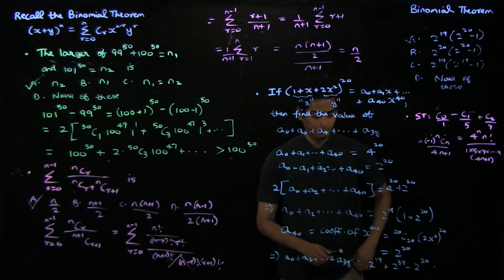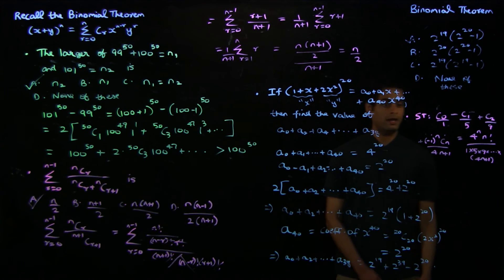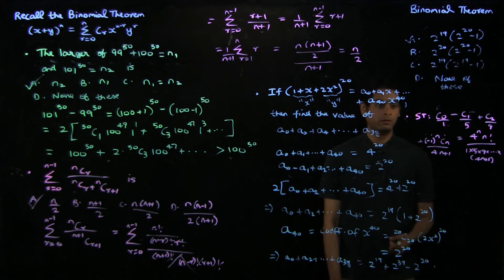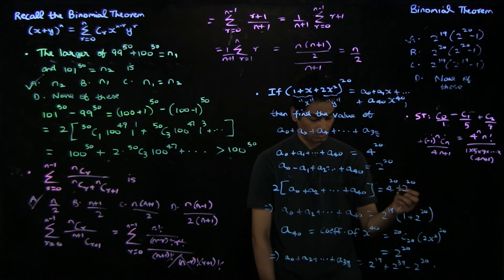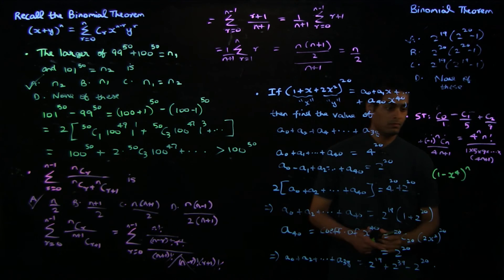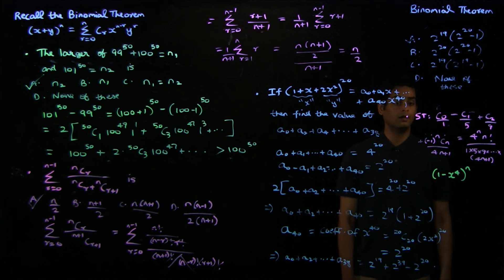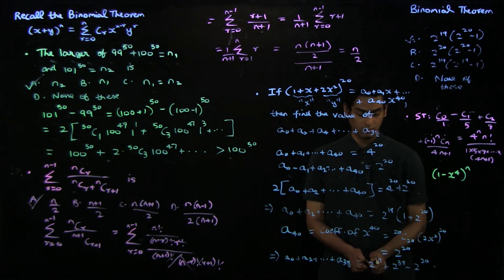I won't work this problem out, but I would like to provide a hint. Notice that you have 4n plus 1 appearing in the denominator instead of n plus 1. To obtain 4n plus 1, you need to integrate x power 4n, which would give a term of 4n plus 1 in the denominator. You can do this by looking at the binomial expansion of 1 minus x power 4 whole power n. The r plus 1 term is going to have x power 4r, and integrating that gives x power 4r plus 1 divided by 4r plus 1. Plugging in x equals 1 will give you the corresponding terms in the expansion.